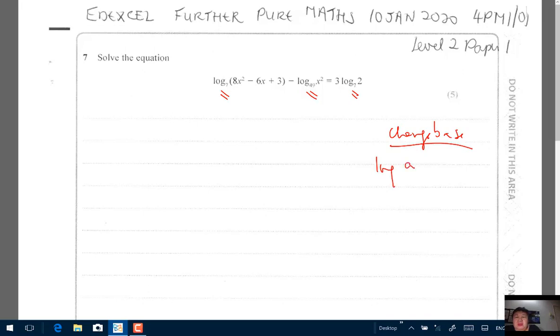So the rule is log of A to base B. If you want to change it to base A, it will be log A to base A over log of B to base A. Log A to base A is 1. So it's 1 over log of B to base A. That means it's actually the inverse. Log AB is 1 over log of B to base A.